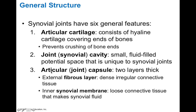The articular capsule, or joint capsule, surrounds and encases this synovial cavity. It's two layers thick: an external fibrous layer and an internal synovial layer. The fibrous layer surrounds and encases the synovial joint to hold it together, and it's made of dense irregular connective tissue, which is tough. The inner layer of this joint capsule is the synovial membrane, which lines the inner surfaces of the synovial joint and is made of loose connective tissue.